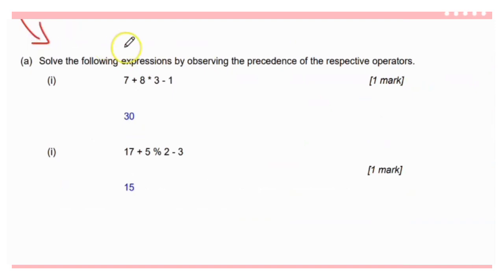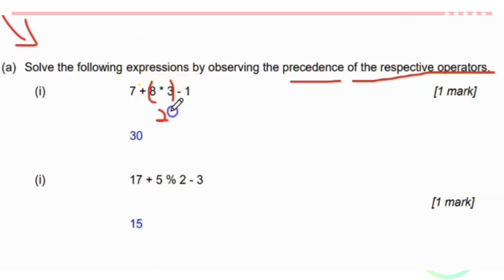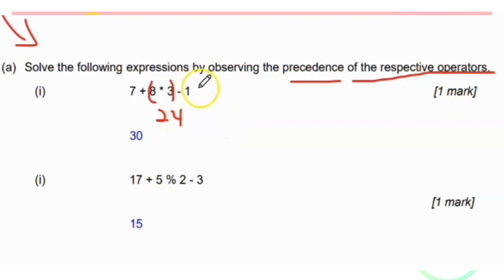Solve the following expression by observing the precedence of the respective operators. First question: 7 + 8 * 3 - 1. Since multiplication has higher precedence, do 8 * 3 = 24 first. Then left to right: 7 + 24 = 31, then 31 - 1 = 30. The answer is 30.